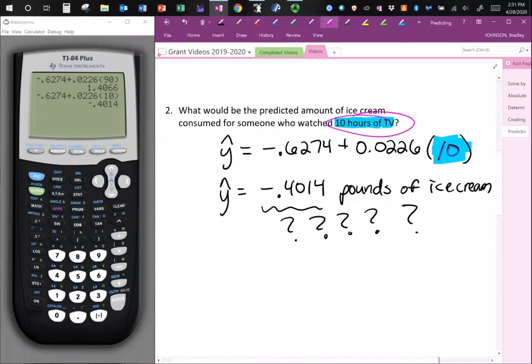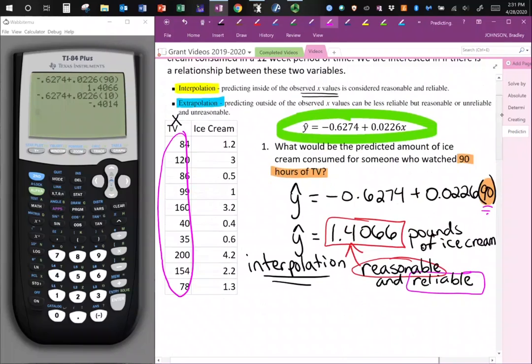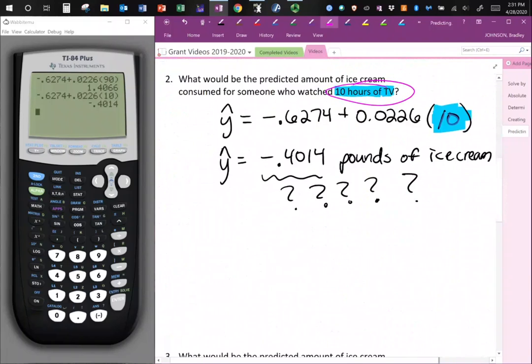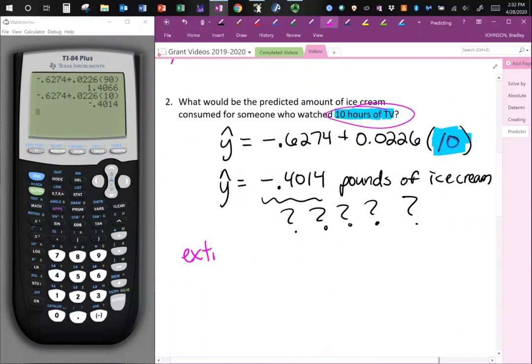So let's go back and think about this. Well, 10 hours of TV, is that interpolation or extrapolation? So going back here, 10, if you think about 10, is not within that observed x value range. So that would tell me that I'm using extrapolation. So I have extrapolation.